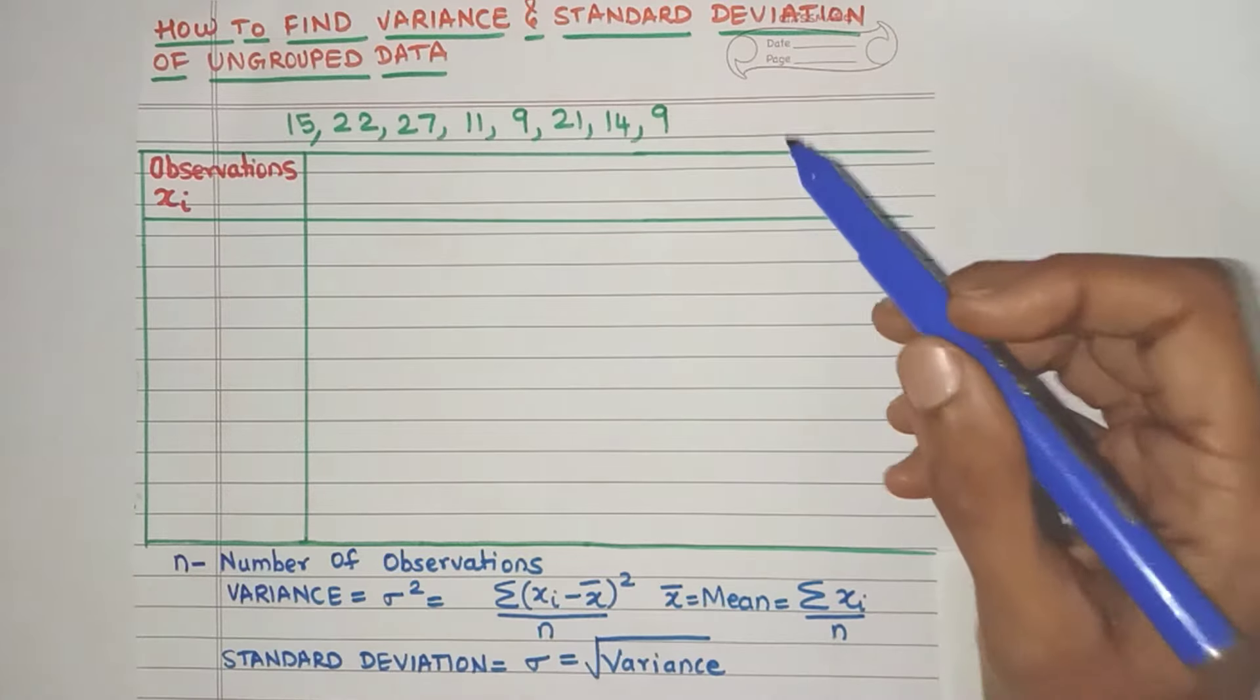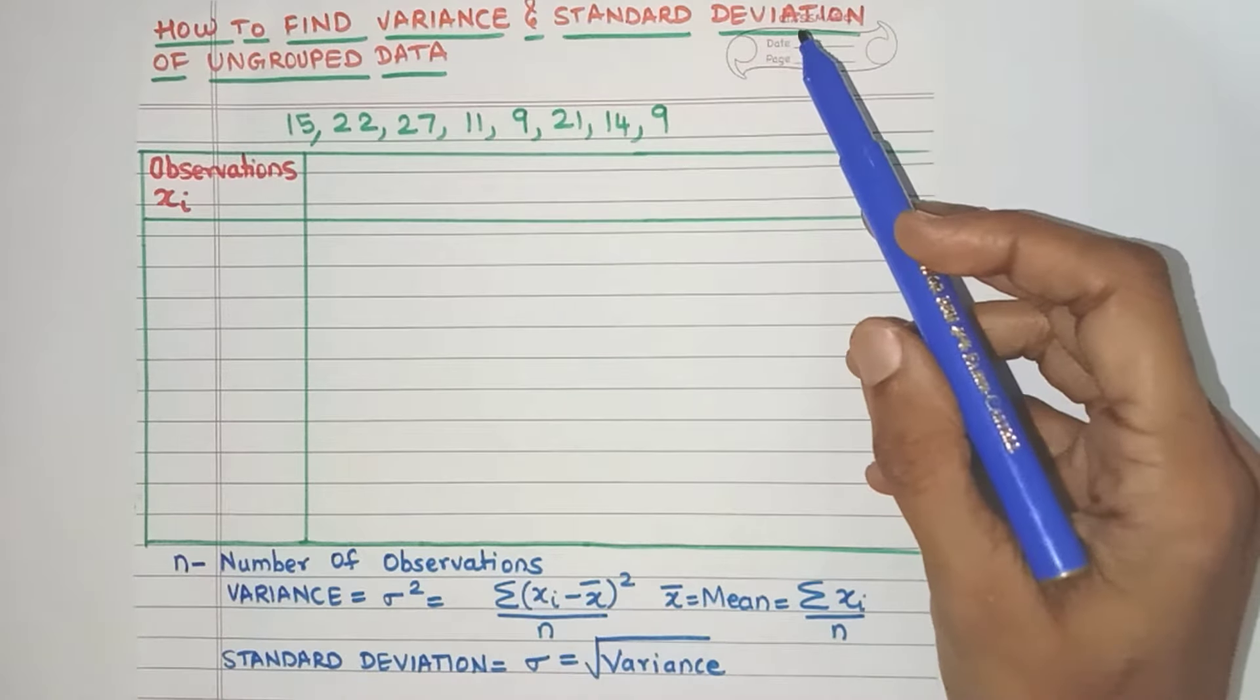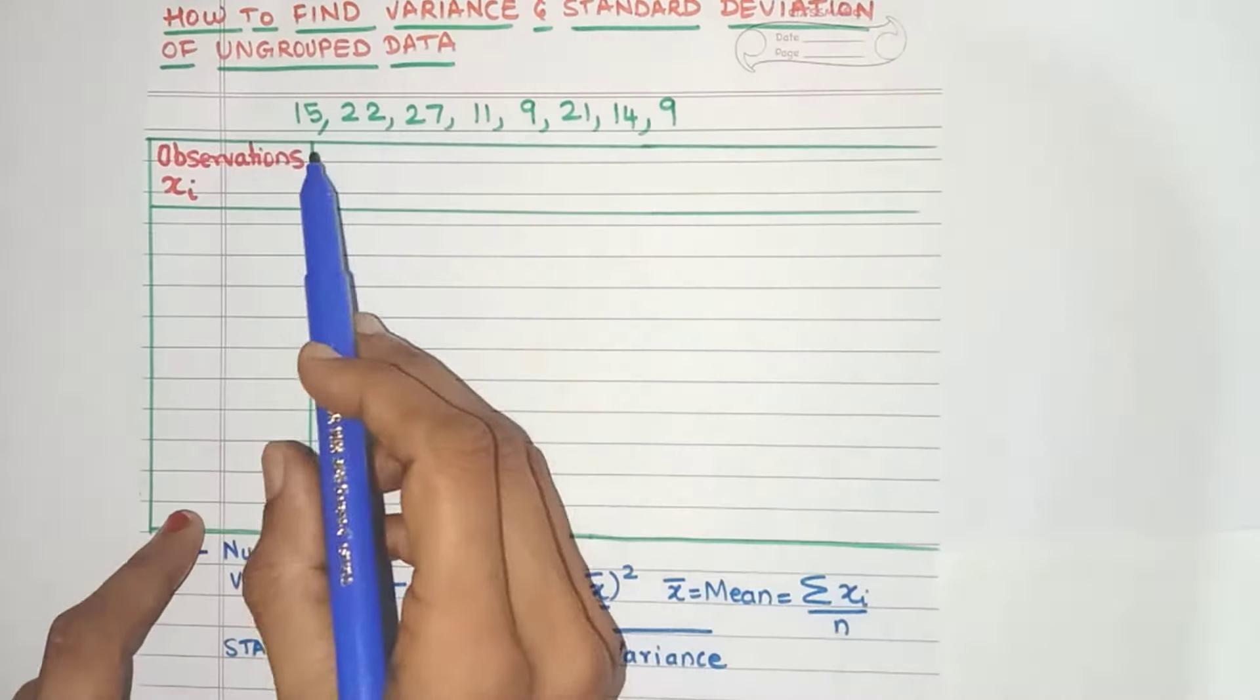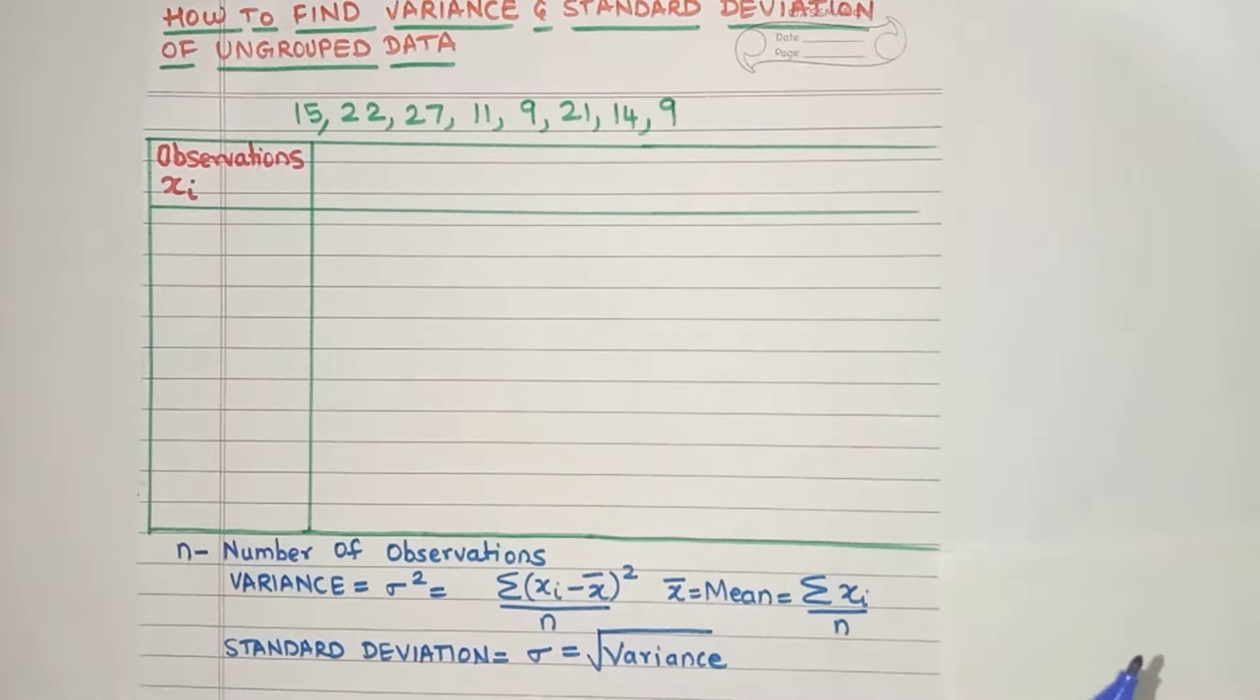Hello everyone. Today let's learn how to find the variance and standard deviation of ungrouped data. So here in this example, these are the observations. As you can see, this is the ungrouped data.